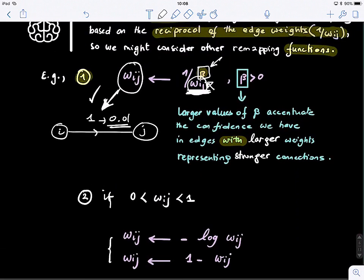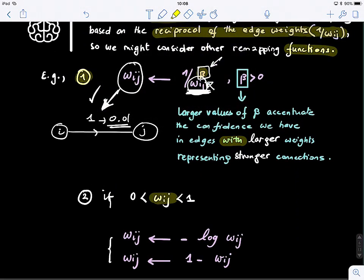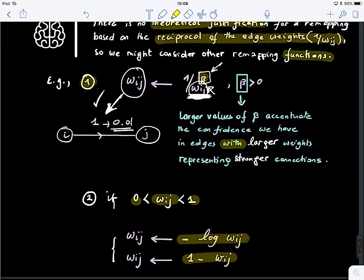Another mapping strategy - if W_ij, the weights are between 0 and 1, then we can possibly take the negative log of the weights or 1 minus the weight. These are two other mapping strategies.